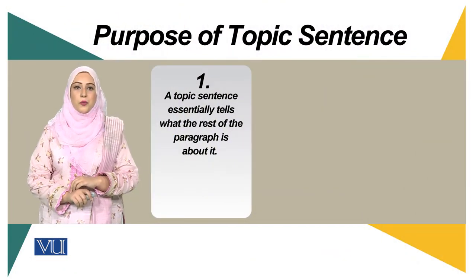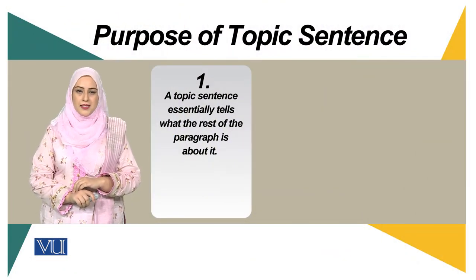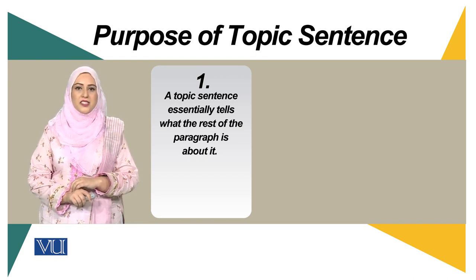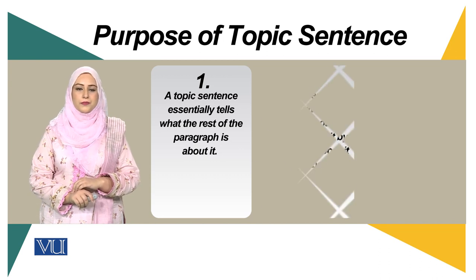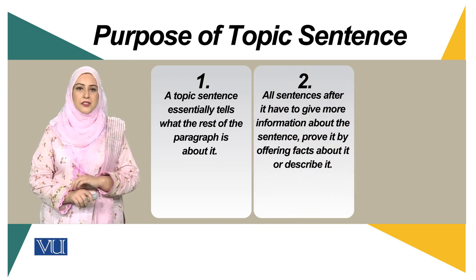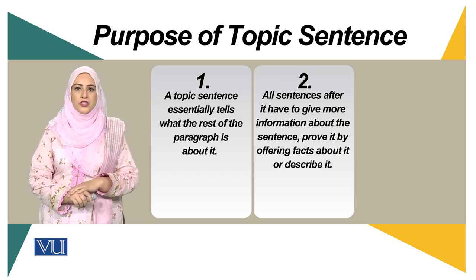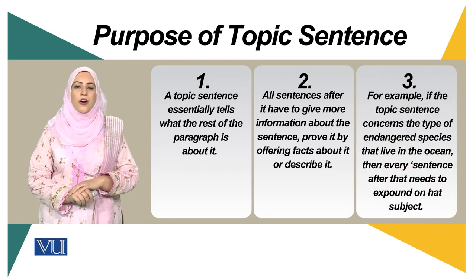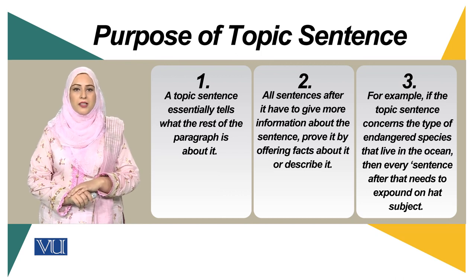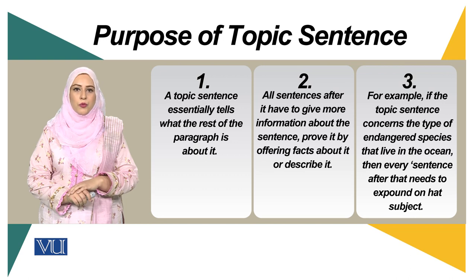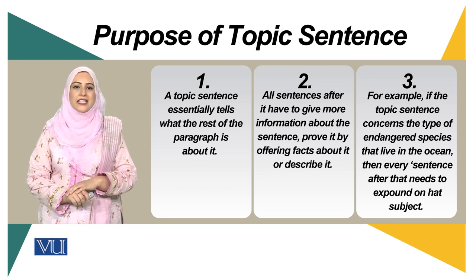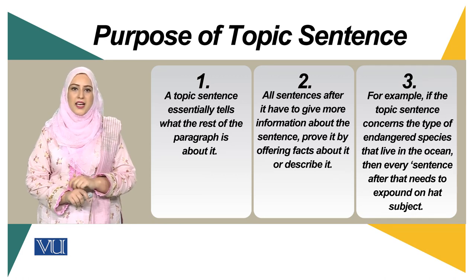Let's talk about what the purpose of a topic sentence is. A topic sentence is essentially telling the readers what the paragraph is going to be about. All the sentences that come after the topic sentence are in support of the main idea. For example, if you are talking about endangered species in the ocean, then the supporting sentences should be related to that one main idea.